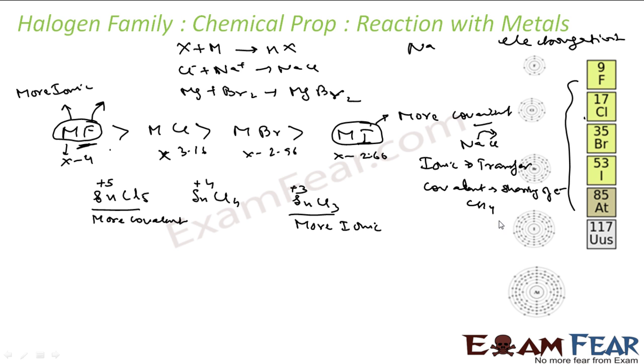In this case, 4 electrons are shared between carbon and hydrogen. So, Sn can't give 5 electrons. So, some of them are shared here. So, it is more covalent in nature, but it can give 3 electrons. It's more ionic.